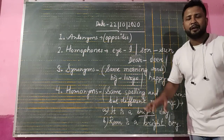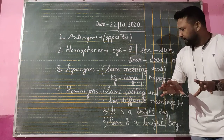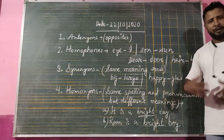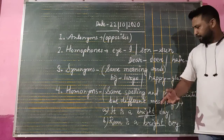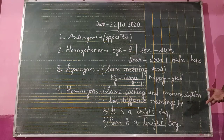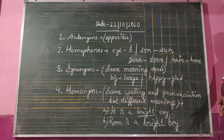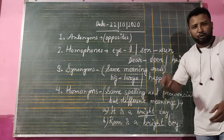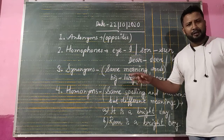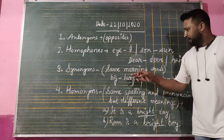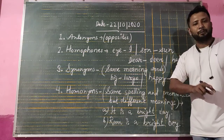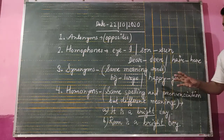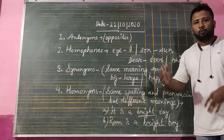Words are different — different spelling, different pronunciation — but the meaning is almost the same. For example: 'big' and 'large' have the same meaning, and 'happy' and 'glad' also have the same meaning. So there are many English words with similar or the same meaning, but different spelling and different sound. That is what synonyms are.